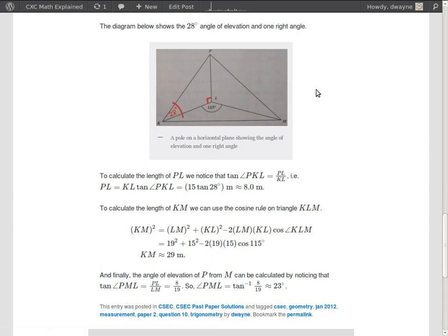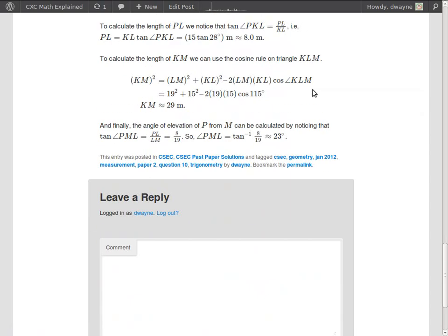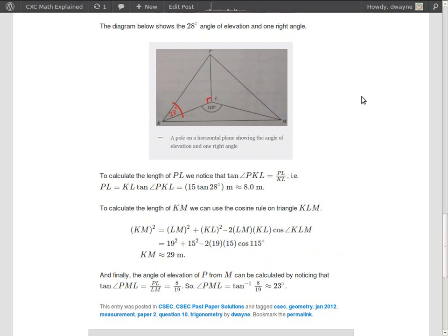Can we use sine? Well, sine of 28 degrees is equal to opposite, which is PL over hypotenuse, which is KP. We don't know KP, so we wouldn't try sine.